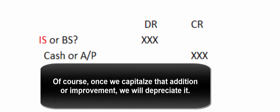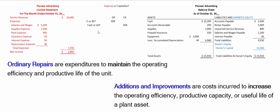And if we're really smart, we're going to have a subsidiary account of that delivery truck asset called '2017 engine overhaul' to keep track of that asset separately. Big picture: ordinary repairs, debit an expense account. Additions and improvements, debit something on the balance sheet.